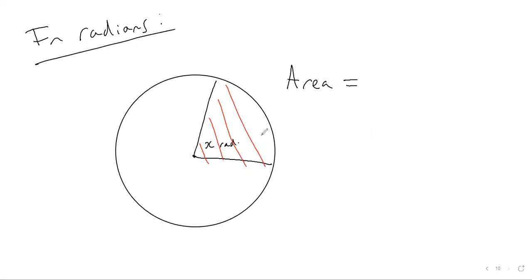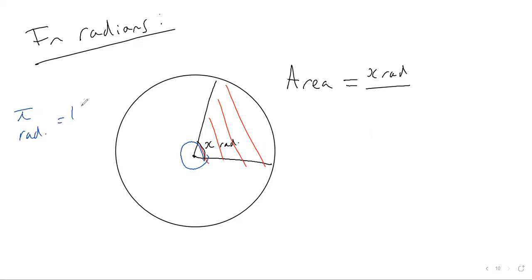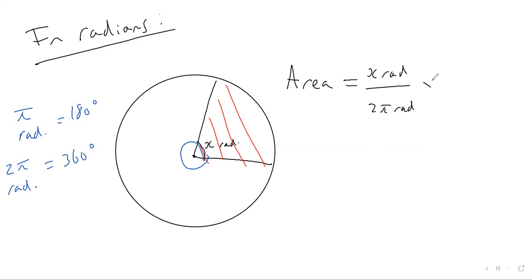When we go to radians, the area of a sector is the angle x in radians divided by the number of radians in a full circle. Remember, π radians equals 180 degrees, so 2π radians equals 360 degrees. So we have x radians out of 2π radians.